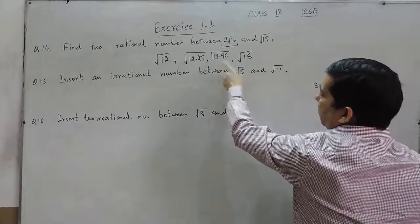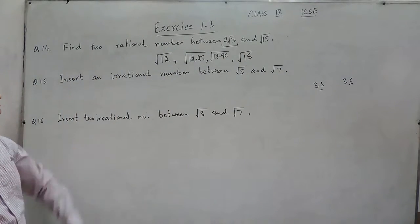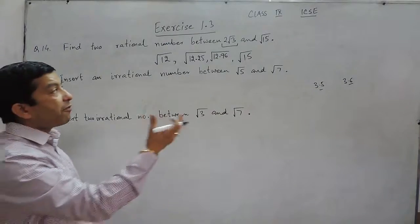So all the numbers which are basically the perfect squares and in the form of under root, are known as rational numbers.